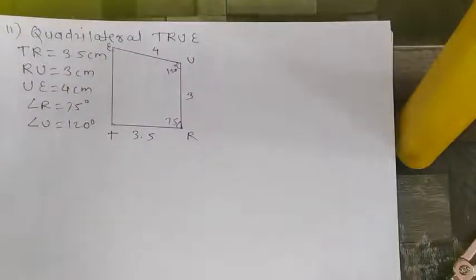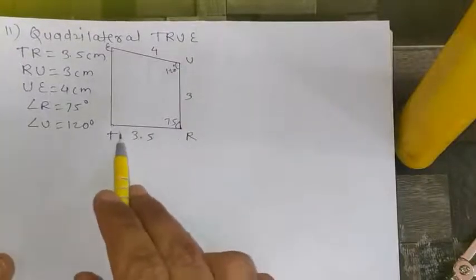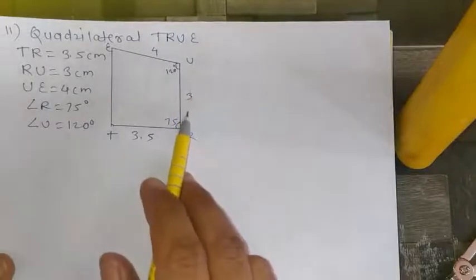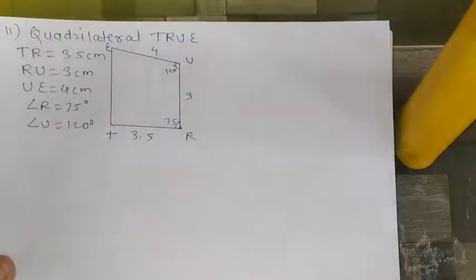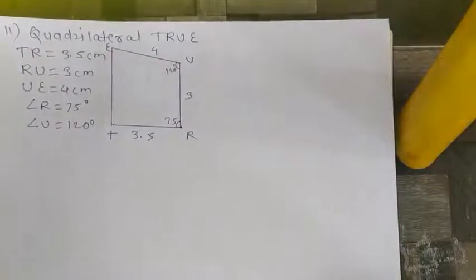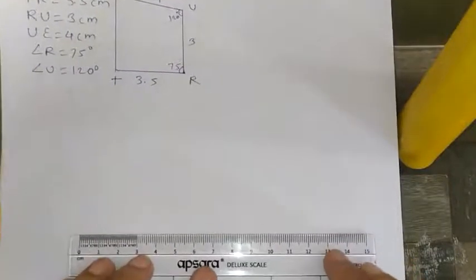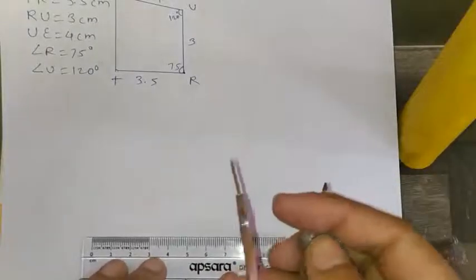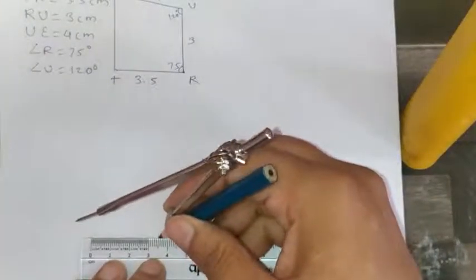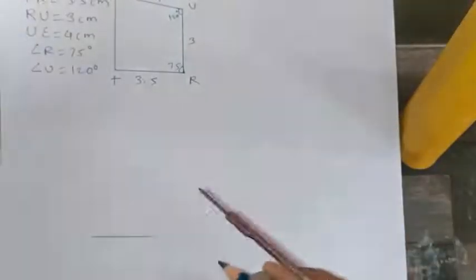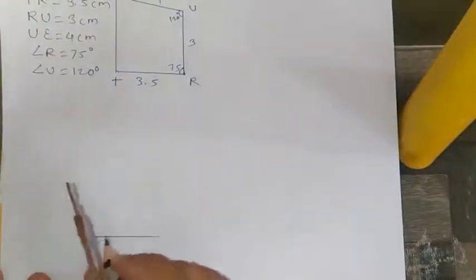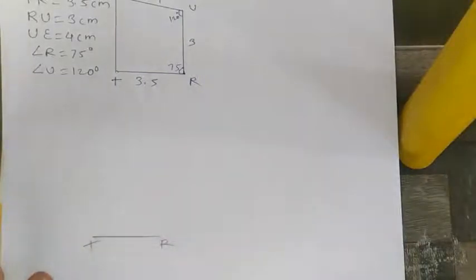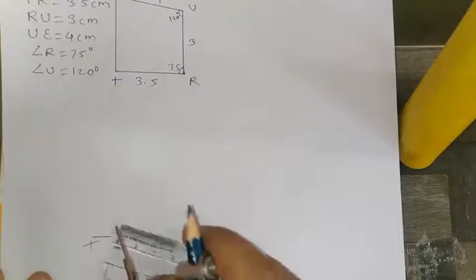Now we are on the second question — quadrilateral TRUE. I have already done it in a rough sketch. TR is 3.5 cm, RU is 3 cm. We directly start by drawing TR, which is 3.5 centimeters. Step 1: Draw TR with 3.5 centimeters. The next step is to make an angle of 75°.